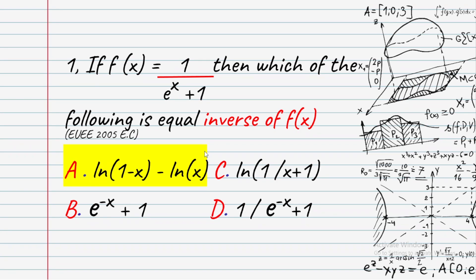The result is: ln in the bracket (1 minus x) minus ln x. This simplifies using the log property ln(x/y) = ln x minus ln y, so ln(1 minus x) minus ln x equals ln in the bracket (1 minus x) over x.